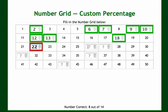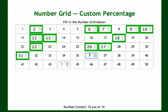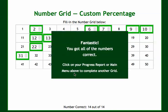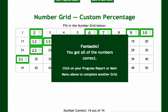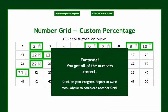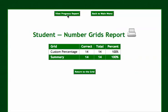You can see the scoring down here happens automatically as I go — 22, 26, 27, 31, 36, 44. I got all of these numbers correct. It says click on your progress report or main menu above to complete another grid. If I go to view progress report, it shows me exactly how I did: 14 out of 14, 100%.